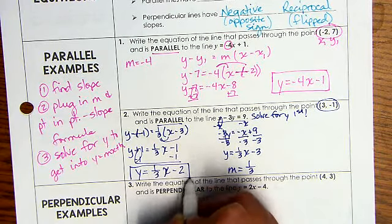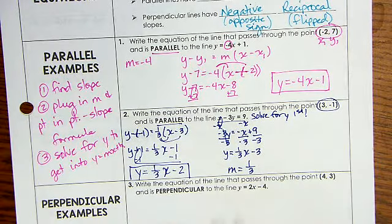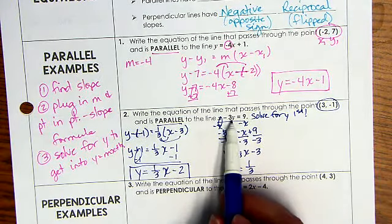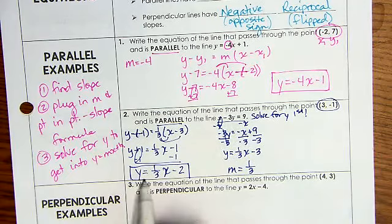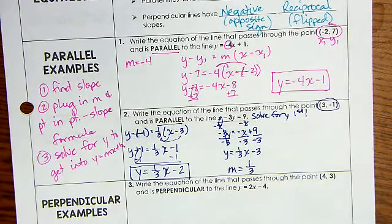Y equals 1 third x minus 2. This is the equation that is parallel to this one that's in standard form. This is my answer. Now we're going to look at it for perpendicular lines.